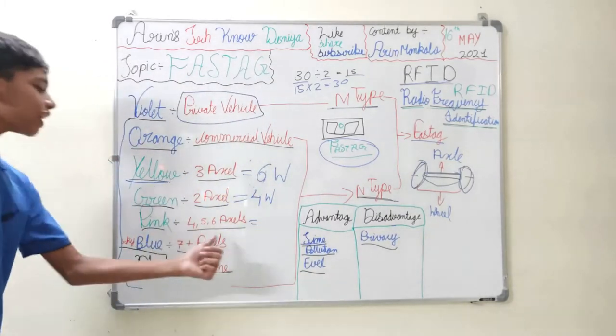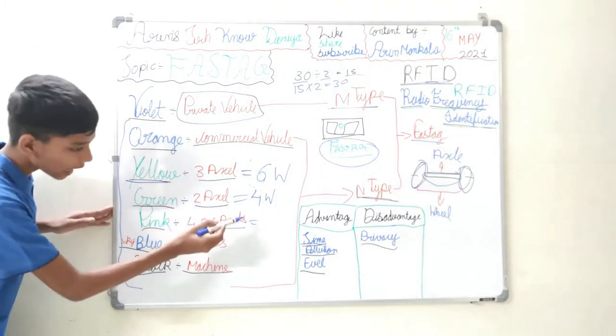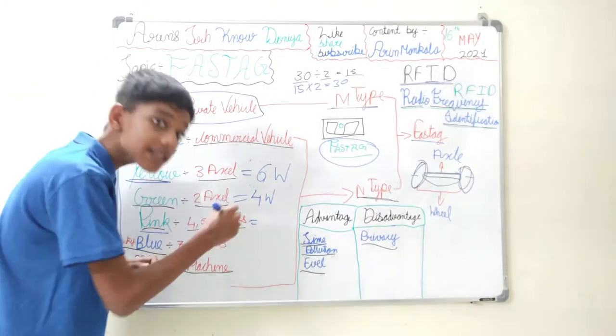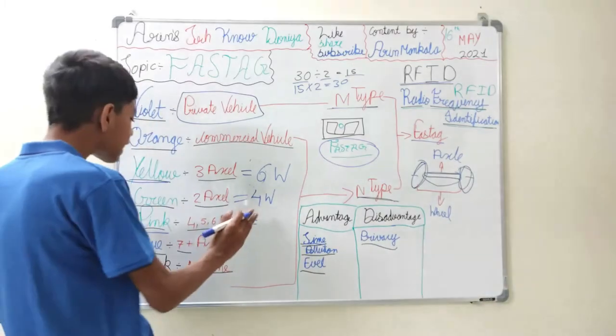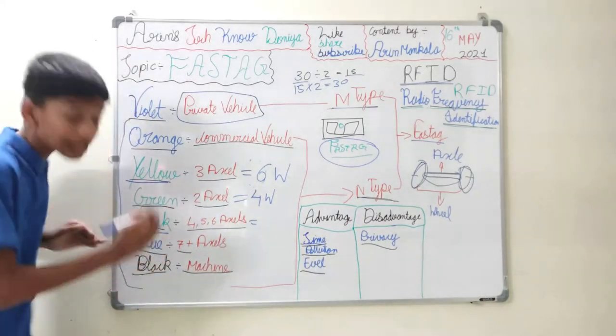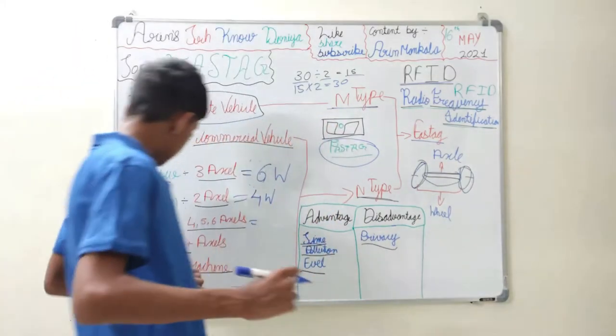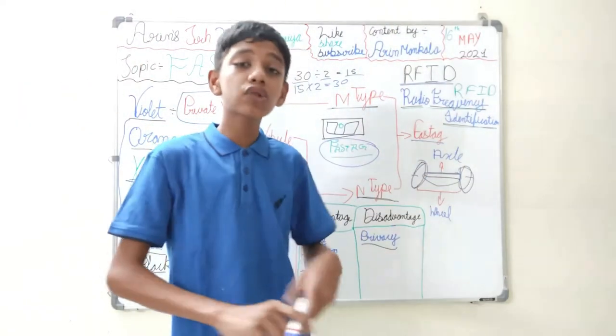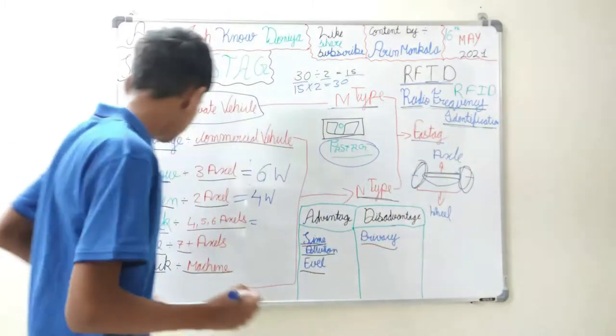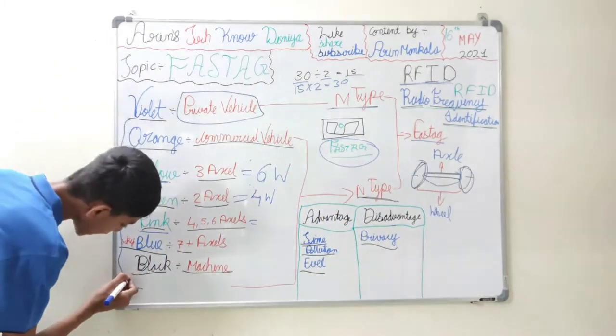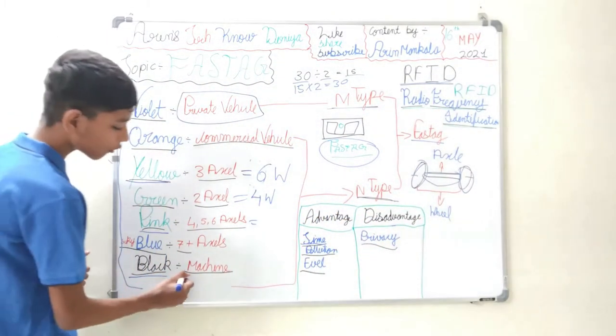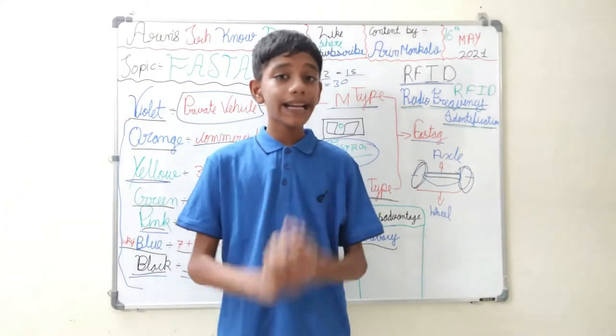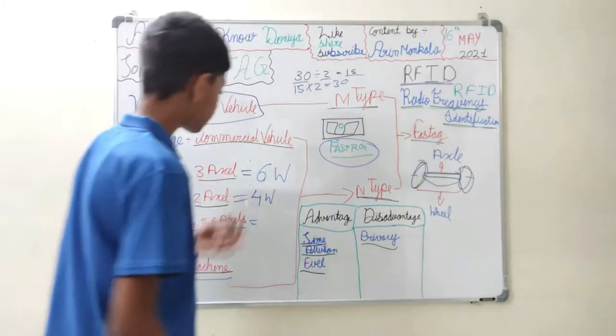And then there are 4, 5 and 6 axle trucks issued under pink card. So for 4 axle, 5 axle and 6 axle trucks, the pink card is given. And then there is sky blue card given for 7 plus axle trucks, which are the big trucks that take the engines and all, the Volvo trucks. And then there is black color used for machinery. So in the machinery comes JCB, excavator. So they all come under machinery.